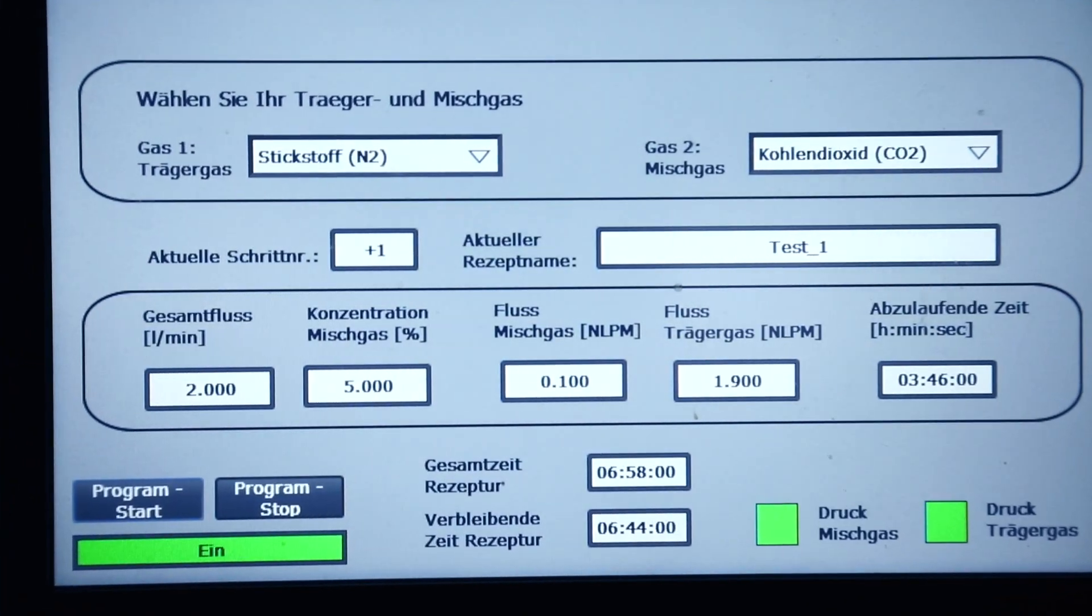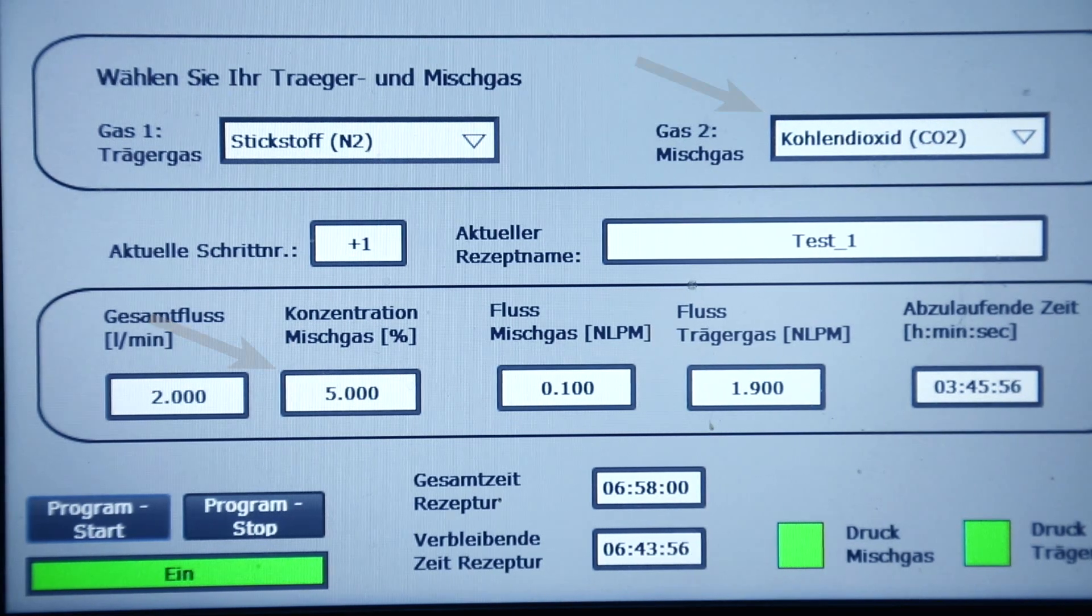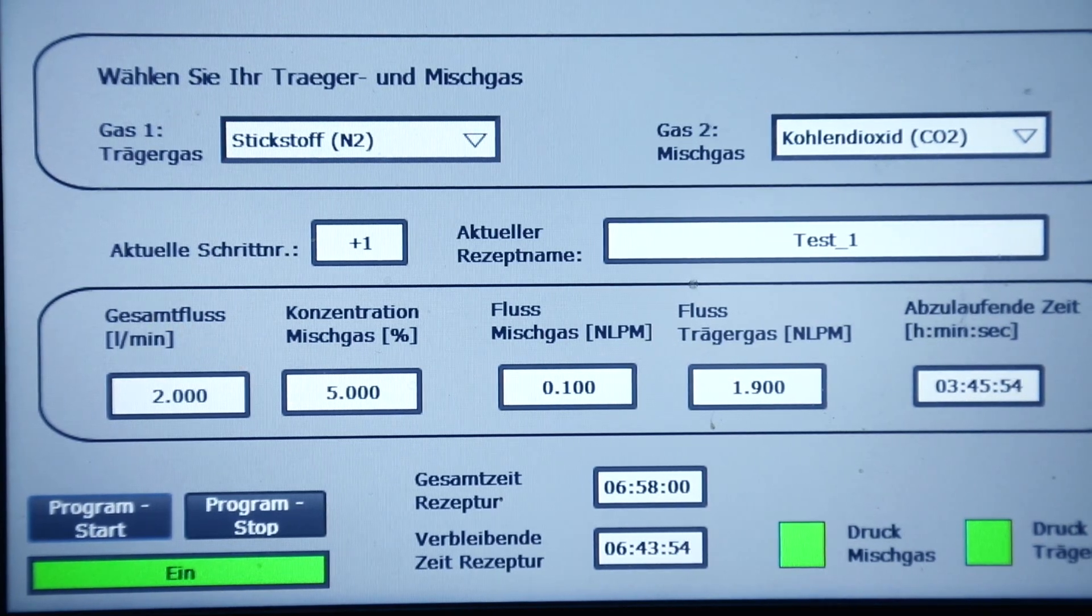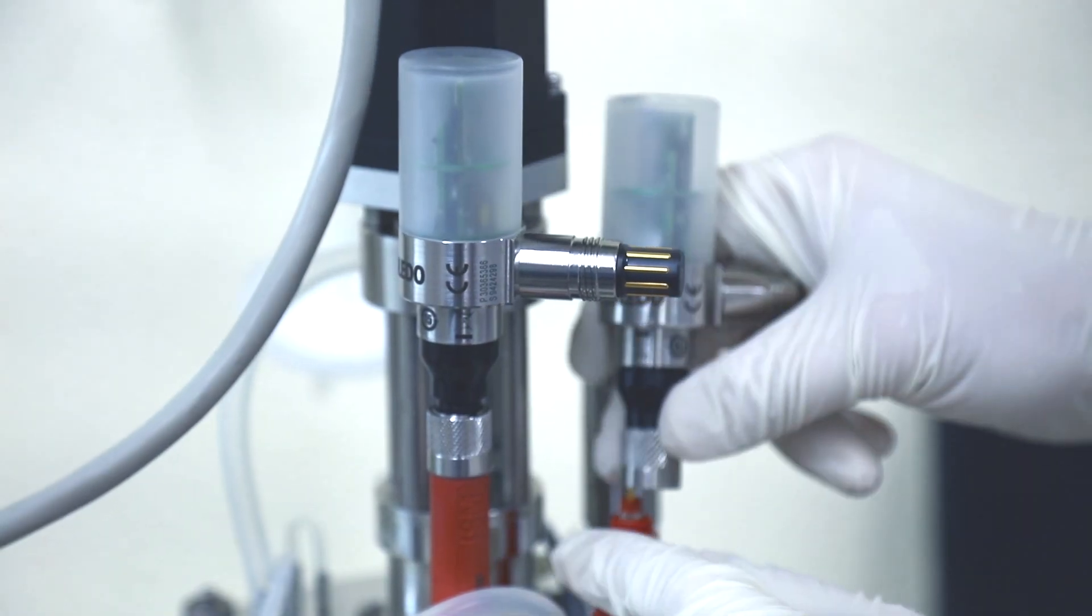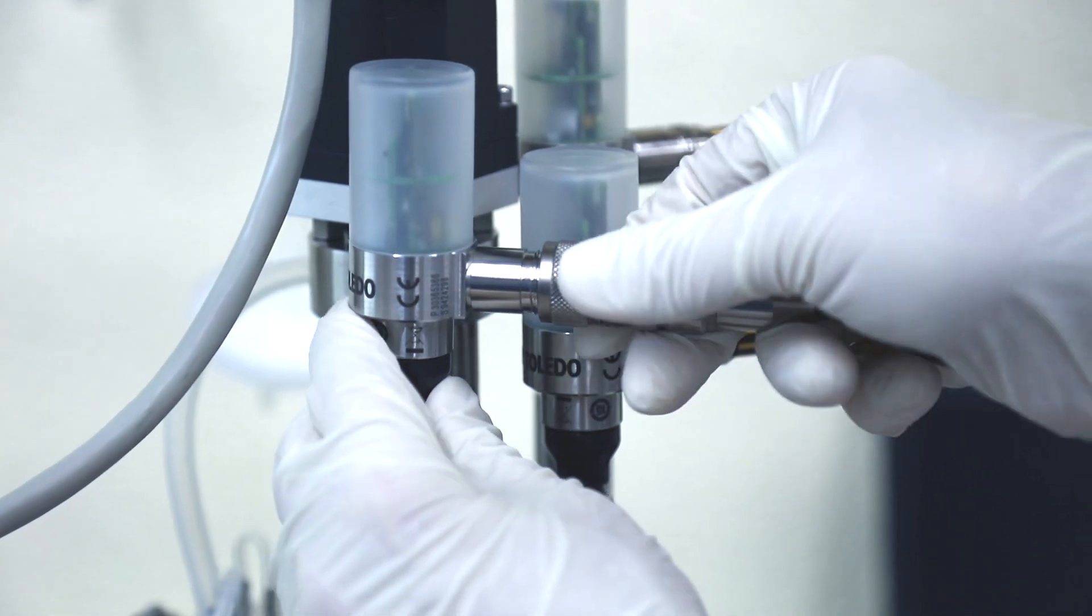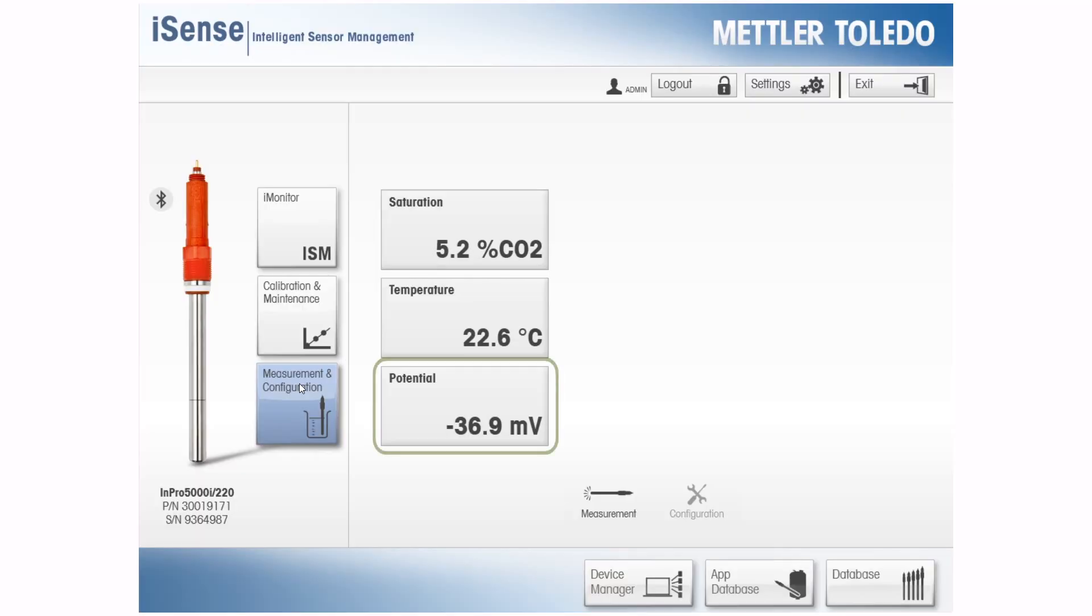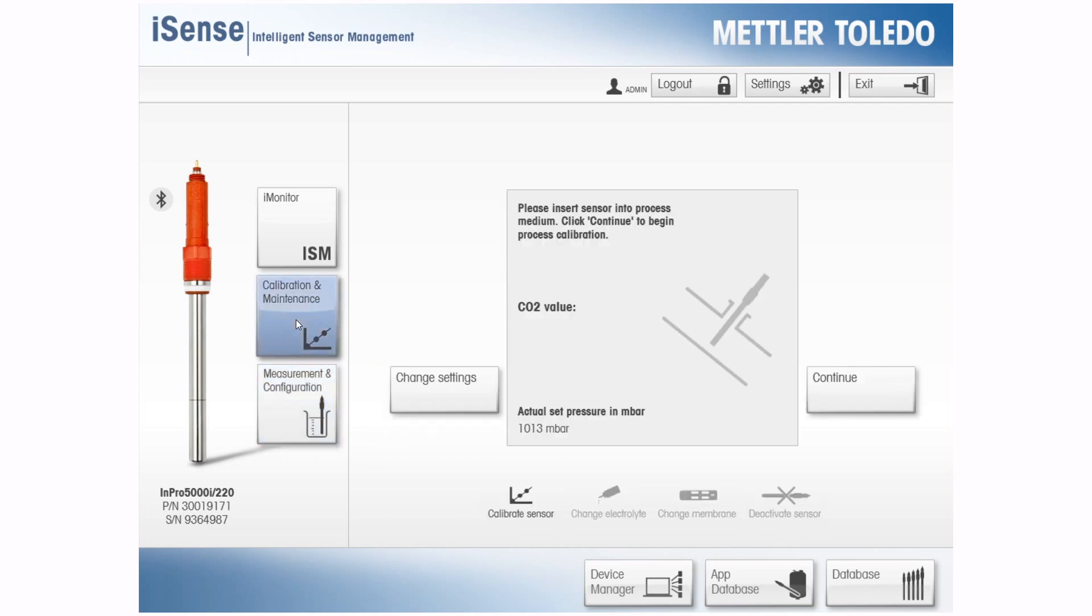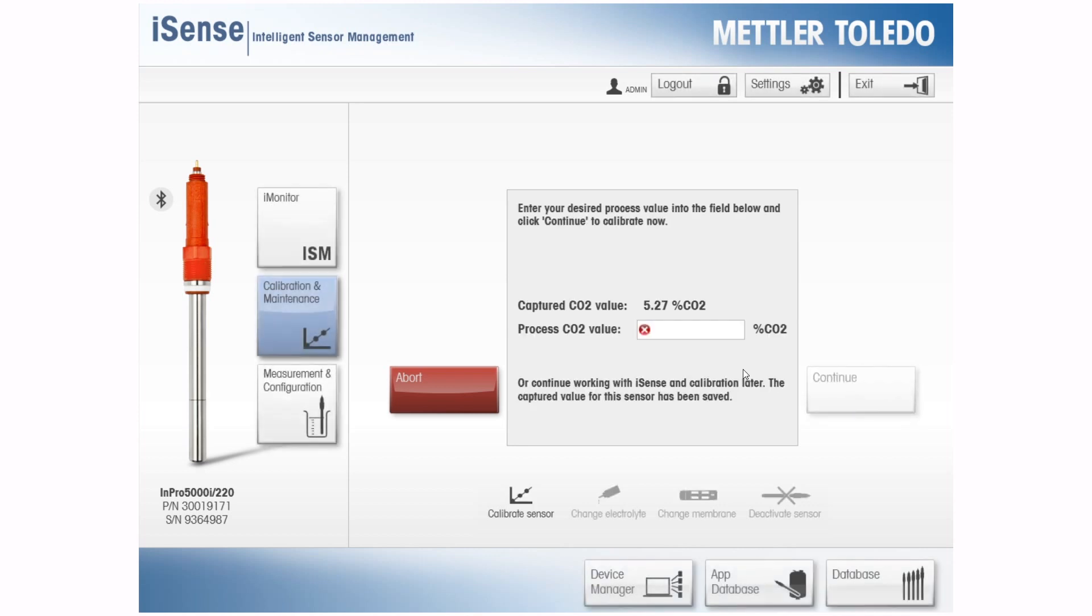We recommend using a gas concentration in the same range that you want to measure. We're using 5% CO2 saturation. Turn on the gas supply to saturate the media with CO2. Monitor the millivolt reading of the NPRO 5000i. Here, we're using iSense. Once the measurement stabilizes, a process calibration and adjustment procedure can be performed.